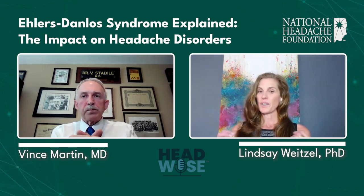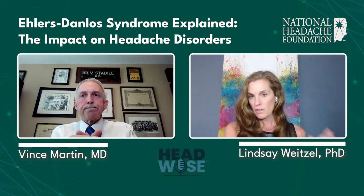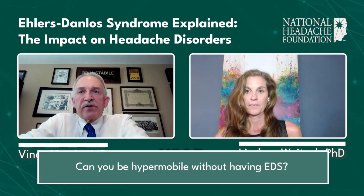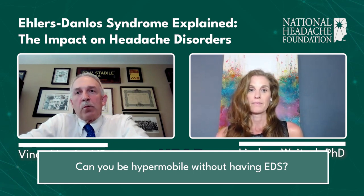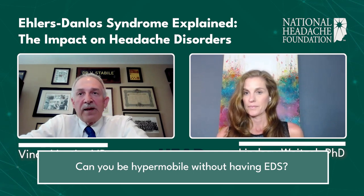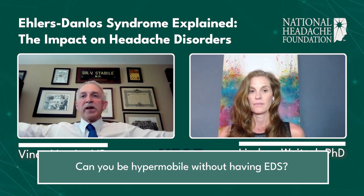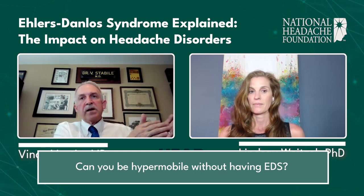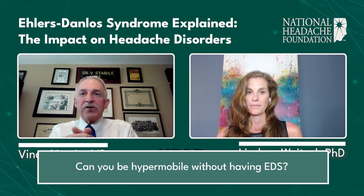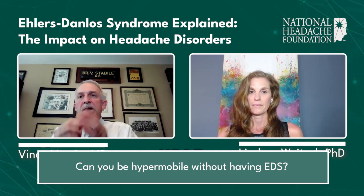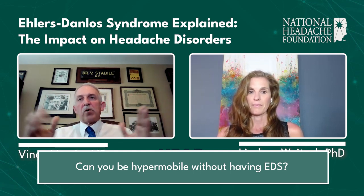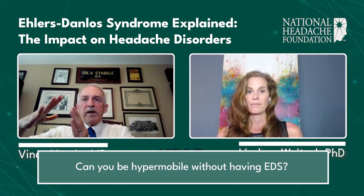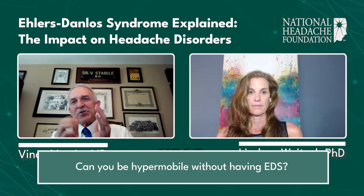You brought up something very interesting that I think is sometimes confusing for people. You can be hypermobile without having EDS, correct? EDS is a diagnosis that requires a number of different things. One of the criteria is whether you have family members with this disorder, and they also measure your wingspan among other parameters. Unfortunately, in 2017 they changed the criteria—before that, it was easier to diagnose someone with EDS, but now you almost need to be in a genetics clinic to formally diagnose someone. There are many people who are hypermobile but don't meet all the formal criteria of hypermobile EDS—so there's a spectrum.